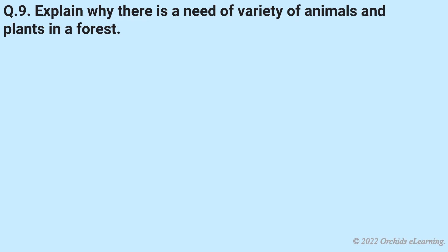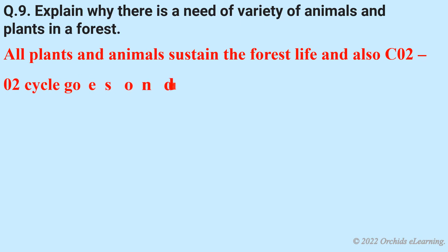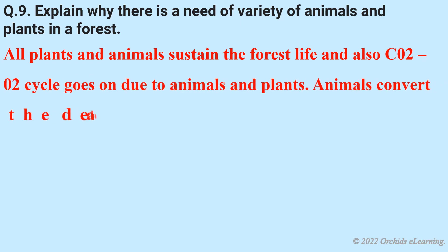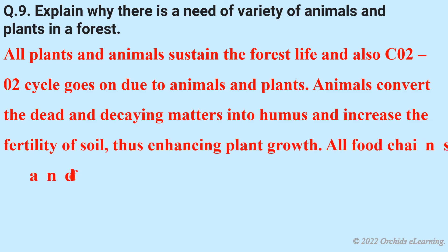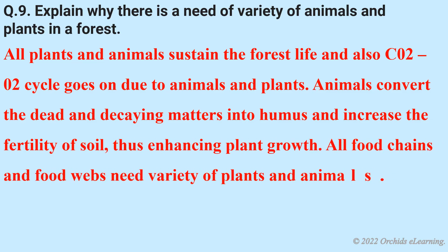Question: Explain why there is a need for a variety of animals and plants in a forest. All plants and animals sustain the forest life. The CO2 and O2 cycle goes on due to animals and plants. Animals convert dead and decaying matter into humus and increase the fertility of soil, thus enhancing plant growth. All food chains and food webs need a variety of plants and animals.